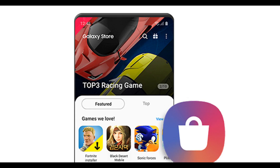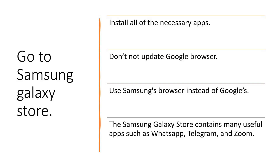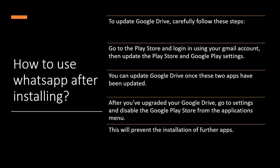Instead of installing programs from the Google Play Store, we can use the Samsung Galaxy Store. The Galaxy Store typically has several essential apps that we use on a daily basis, such as WhatsApp, Telegram, Paydom, and Zoom, as well as many other useful apps. After connecting to the internet, install the programs you require. If you have an 8GB phone, you will most likely have 4GB of free space before you begin installing apps, and the majority of programs will function normally.